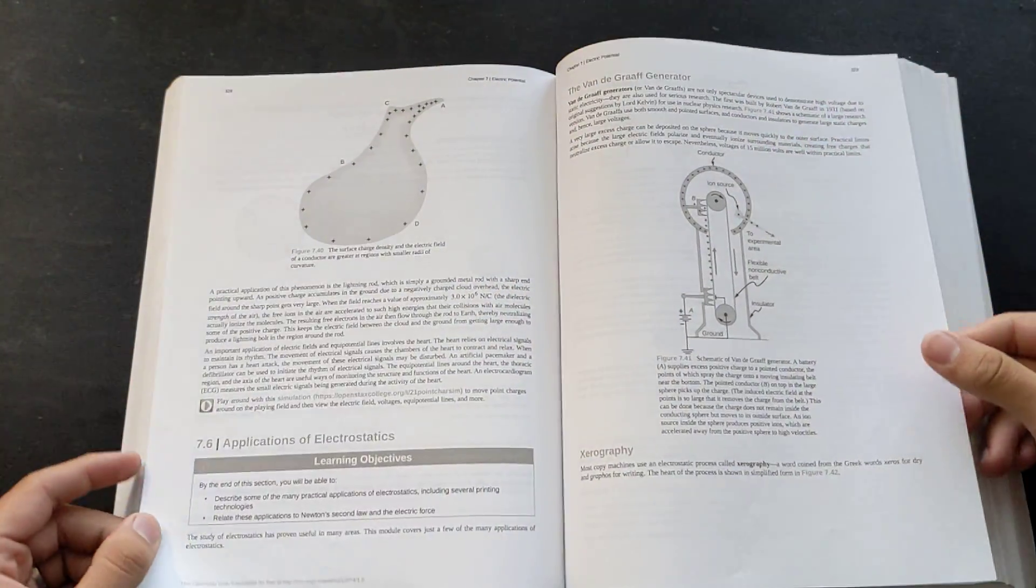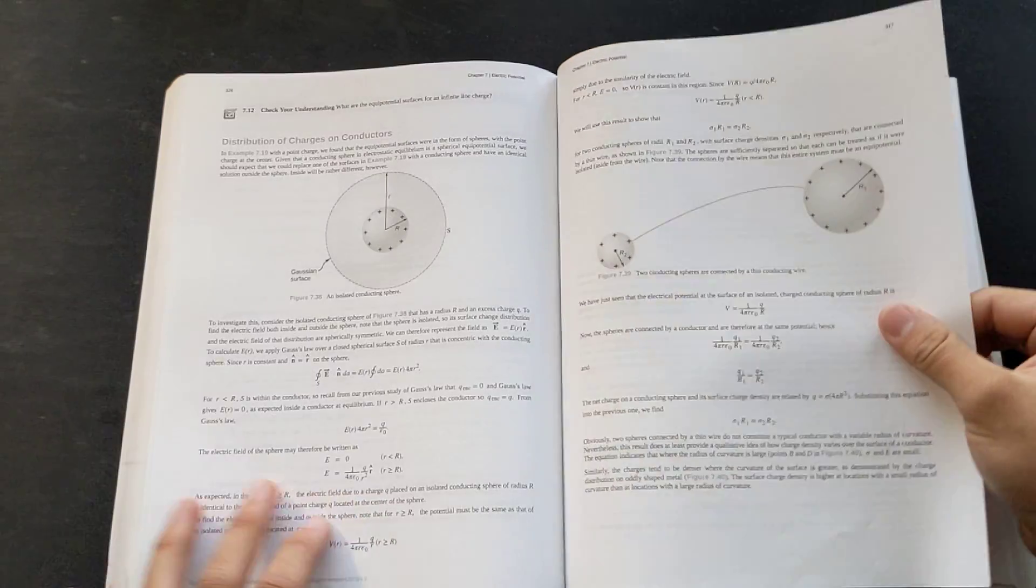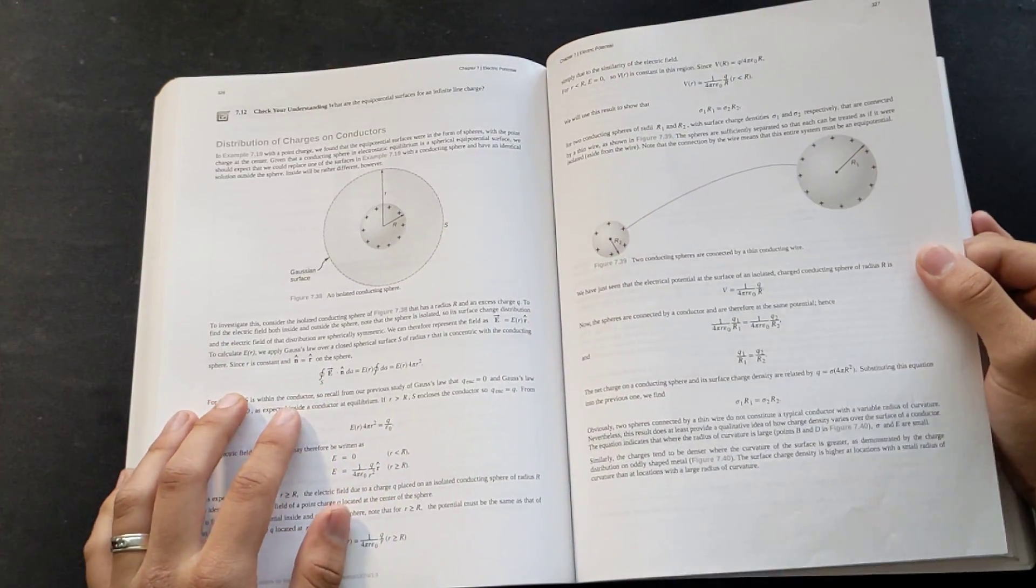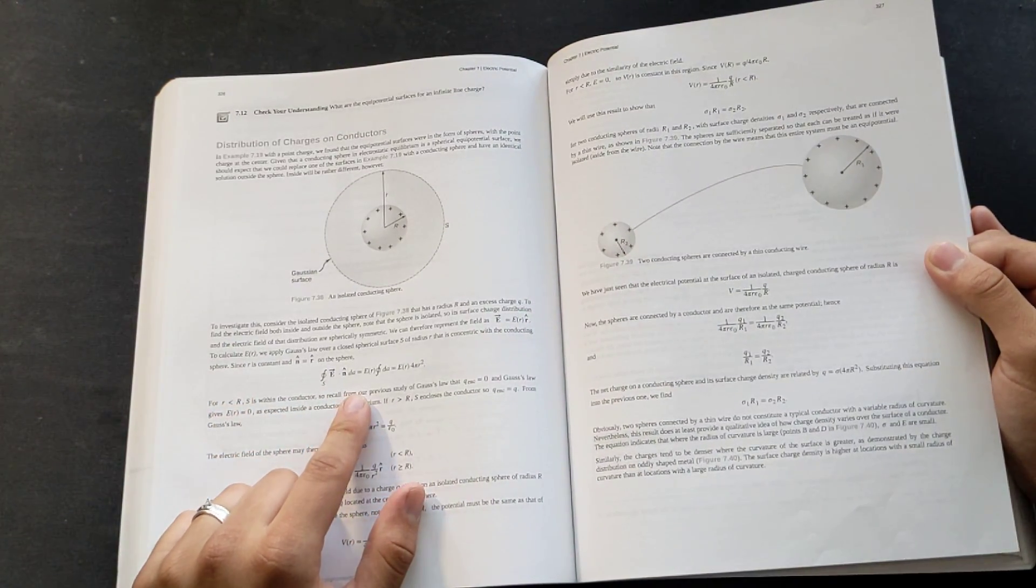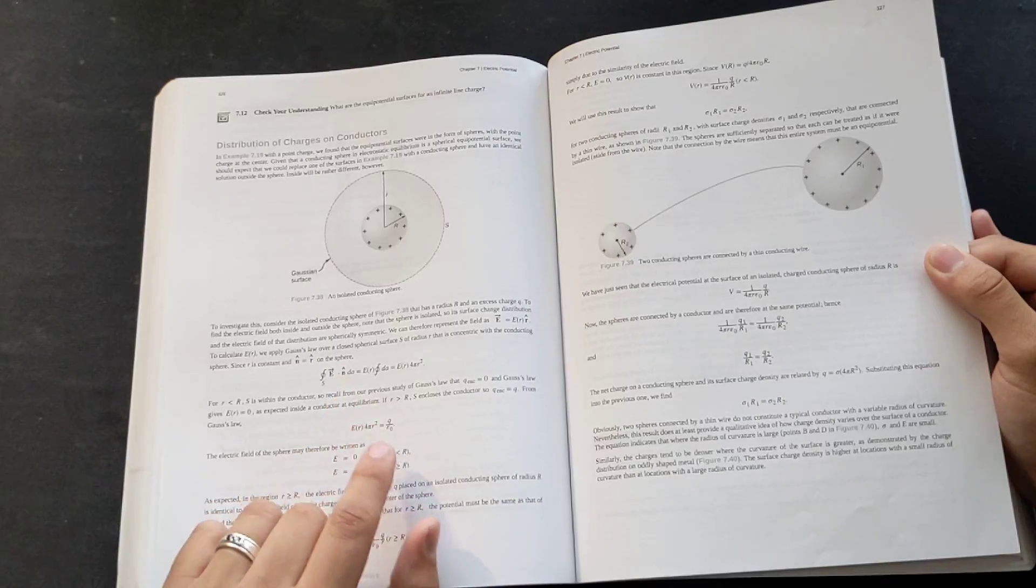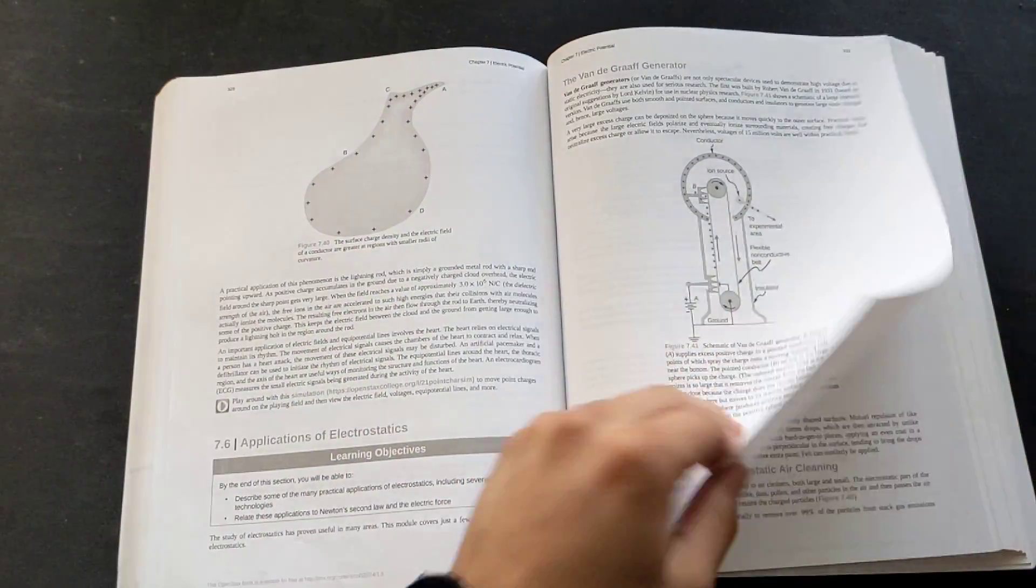We cover further into things called electrostatics, which cover things like Gauss's law right here, where we have closed surface integrals that can be used to find electric fields. All of this.